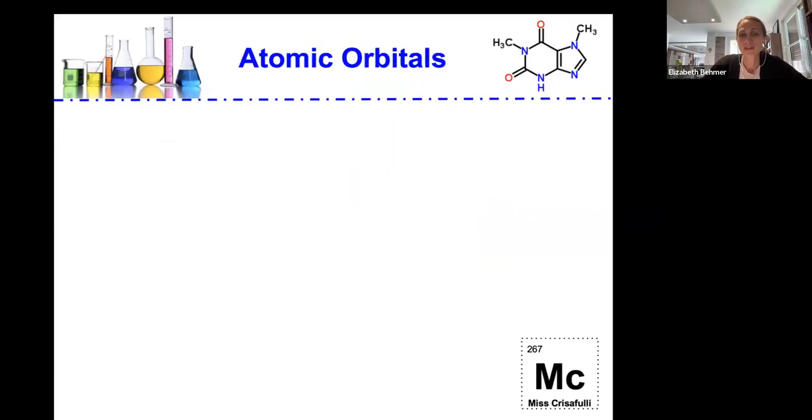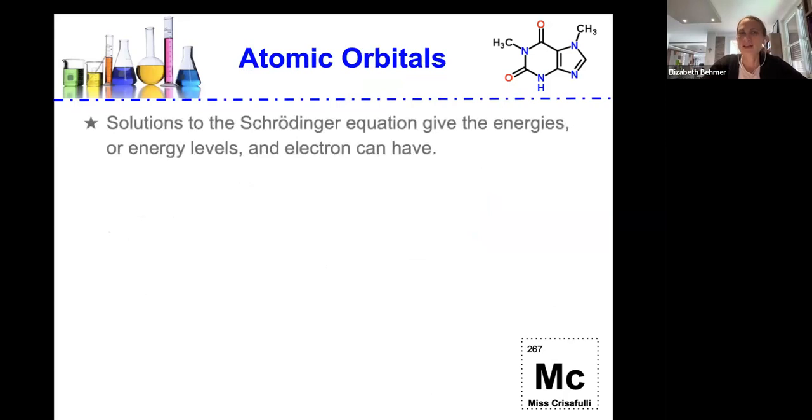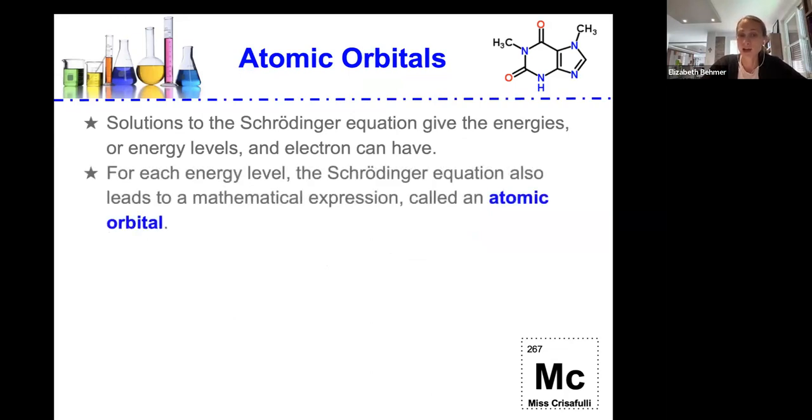So this leads us to atomic orbitals. Solutions to that Schrödinger equation give the energies or energy levels an electron can have. And for each energy level, the Schrödinger equation also leads to a mathematical expression called an atomic orbital.